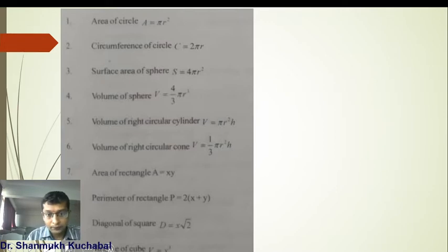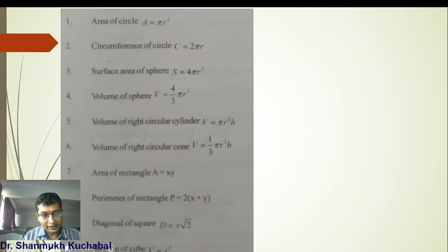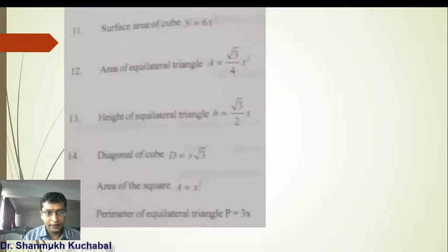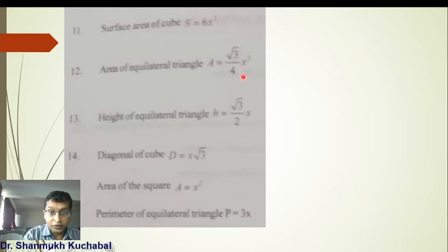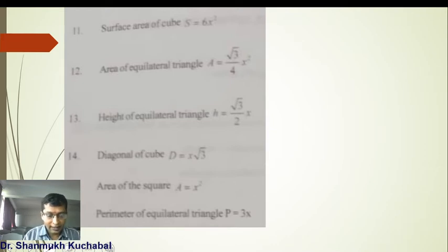Now some important formulas. Area of a circle: A = πr². Circumference of a circle: C = 2πr. Surface area of a cube: S = 6x². Area of an equilateral triangle: A = (√3/4)x². Height of an equilateral triangle: h = (√3/2)x. Area of a square: A = x².